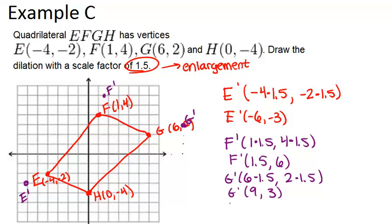And lastly, let's do H. H prime is going to be 0 times 1.5 and then -4 times 1.5, which gives us (0,-6), which is right here.